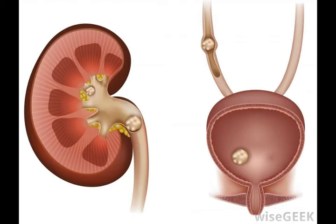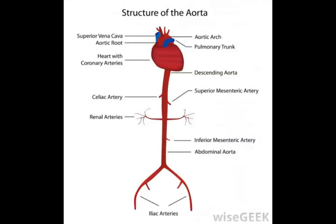Retroperitoneal organs and structures include the right and left kidney, the pancreas and the aorta, which is the largest artery in the body. There are other organs and structures within this space as well. They include the bladder and adrenal glands, the inferior vena cava, which is the largest vein in the body, and part of the esophagus, the structure leading to the stomach.